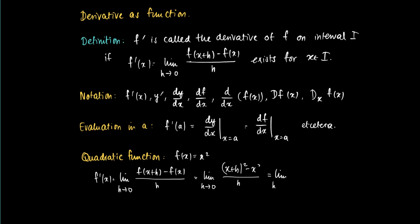If we remove the bracket, in the numerator we get x squared plus 2hx plus h squared, and we subtract x squared and divide by h. Now we see that x squared vanishes and the fraction simplifies.